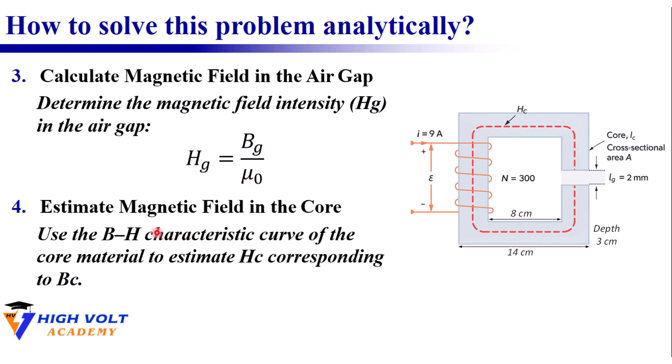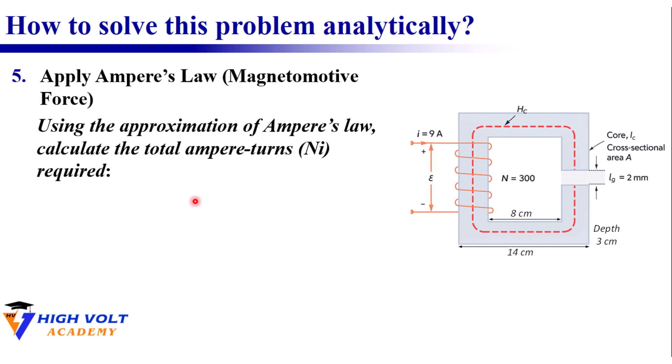The next part is trickier: the magnetic field inside the core or Hc. Here we must use the non-linear BH curve of the core material from our earlier table. We can find the value of Hc corresponding to our current estimate of Bc, and we should use linear interpolation between data points when necessary.